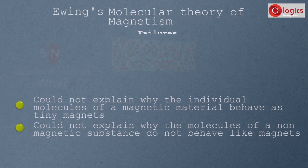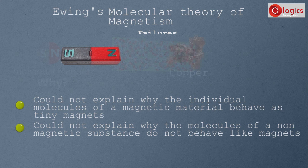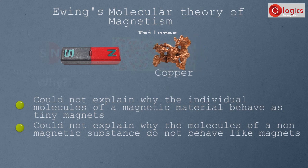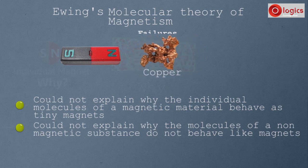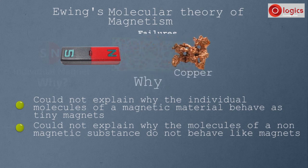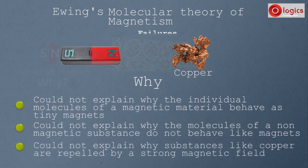When a diamagnetic substance like copper is kept near a magnet, it is repelled. Ewing's molecular theory could not explain why diamagnetic substances like copper are repelled by a strong magnetic field.